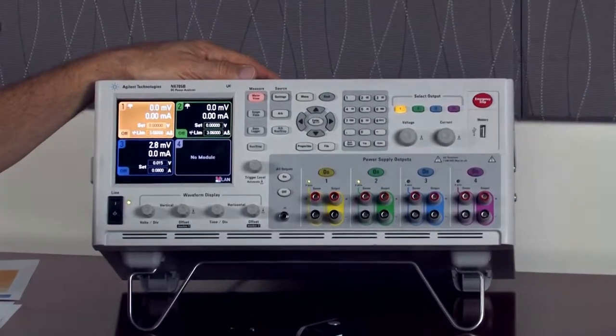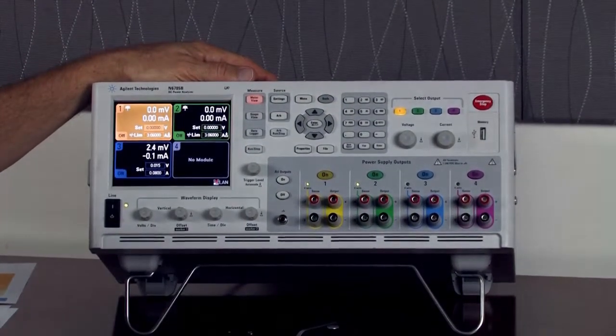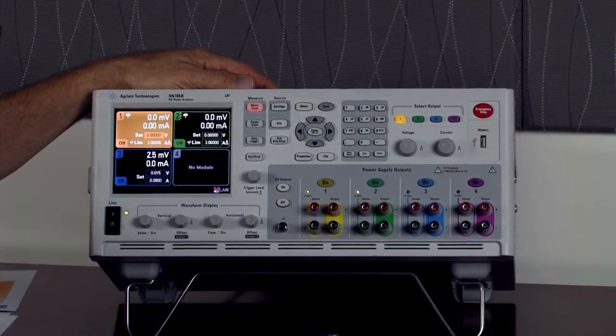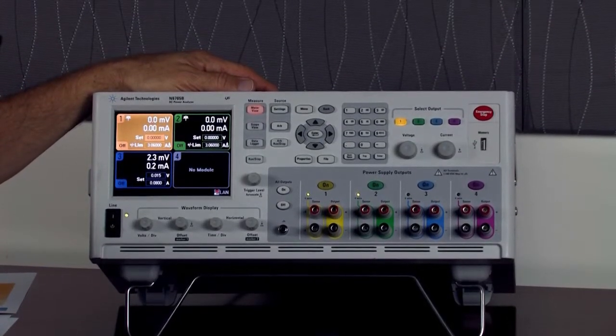So we need to verify that we have the right SMU in our DC power analyzer. I'm going to go to the menu button and use the arrow keys to toggle down to the about selection and hit enter.